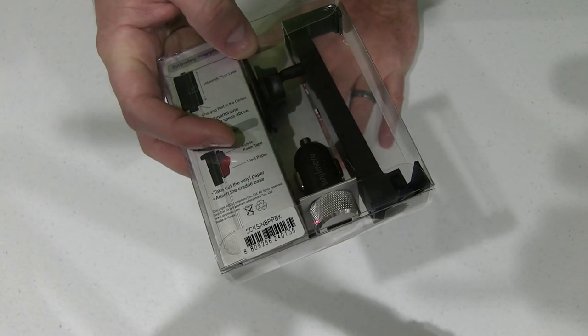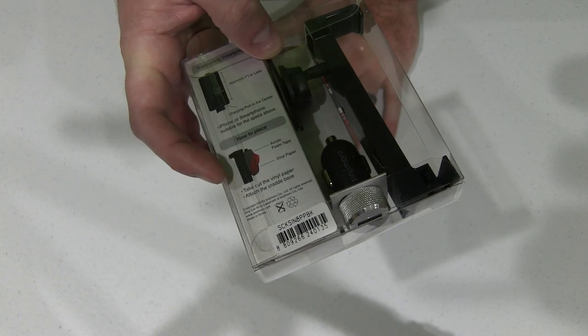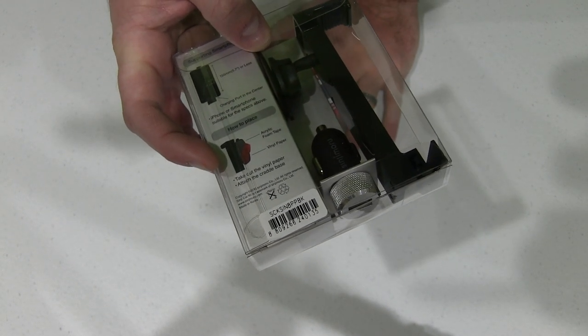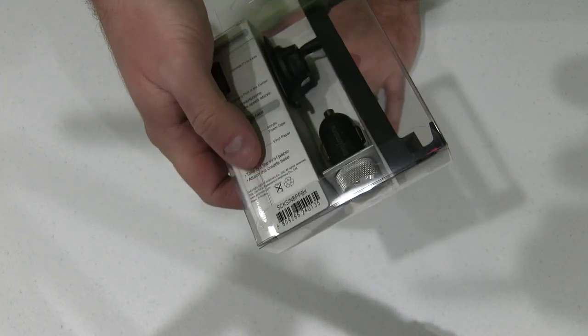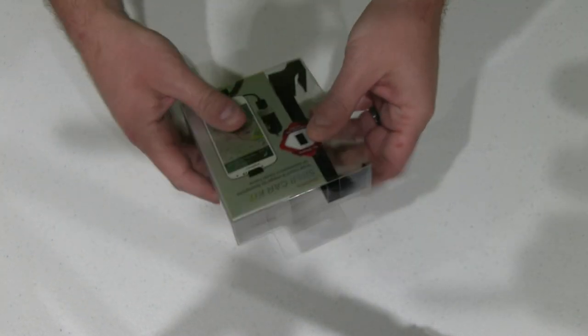It's got acrylic foam tape, vinyl paper. So you can take out the vinyl paper and attach the cradle to the base. That's a really neat mounting option there.